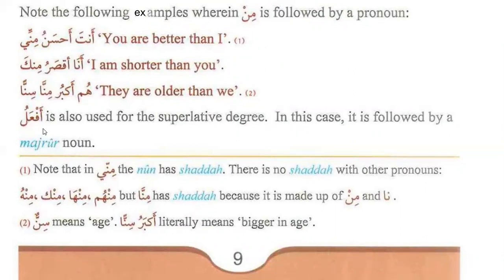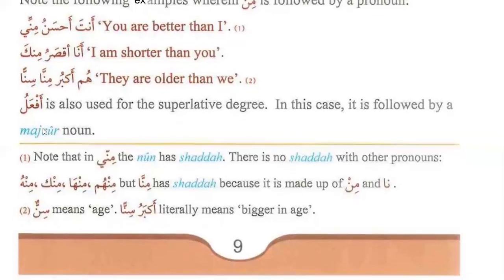Af'alu is also used for the superlative degree. In this case it is followed by a majrur noun. Note that in minni the nun has shadda; there is no shadda with other pronouns — minka, minha, minhum — but minna has shadda because it is made up of min and the noon. Note number two: sinu means age. Akbaru sinun literally means bigger in age.